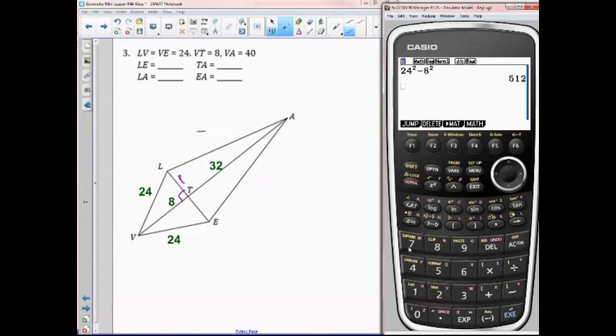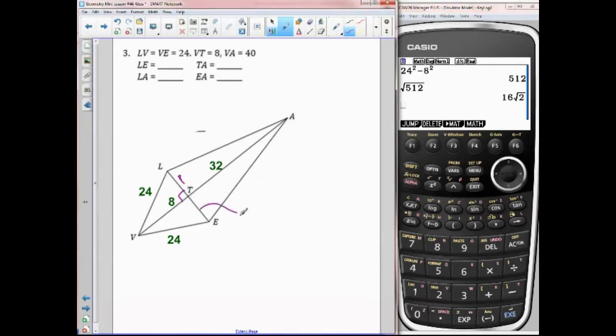So I'm going to take the square root of that to find it. So I go shift there, 512, enter. And it's 16 radical 2. So this side right here, and since we know these are the same because they are congruent triangles, this is 16 radical 2 right here.